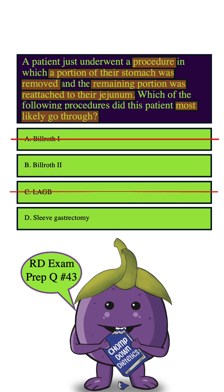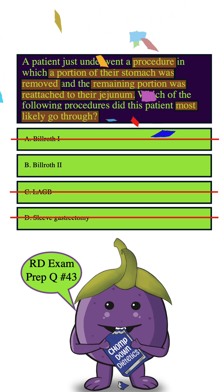How about D? A sleeve gastrectomy involves removing a large portion of the stomach to create a tube-like structure. But again, it does not involve reattaching the stomach to the jejunum. So we can safely eliminate this answer choice as well, leaving us with B — a Bilroth 2 procedure — and that is indeed the correct answer.